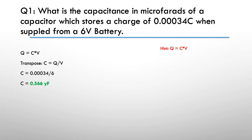In this particular case we need to transpose that equation. Q equals C times V gives us a transposed equation of C equals Q divided by V. So we simply take 0.0034, divide it by our six volts, and you'll get an answer of 0.566 microfarads.